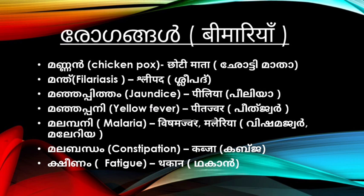The first one is Filariasis. What we call sleep path — Filariasis. The second one is also Filariasis. What is Filariasis? There are types of processes. The pitta planner is Jaundice. The other one is Filariasis — when you call it that, it is Filariasis.